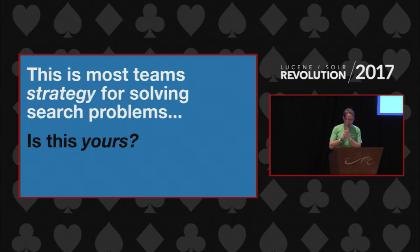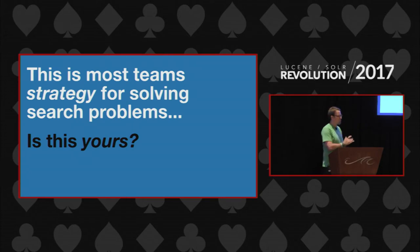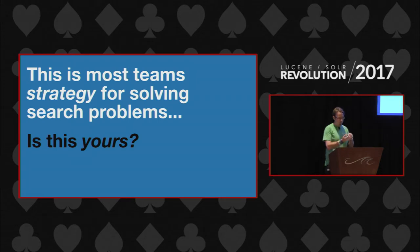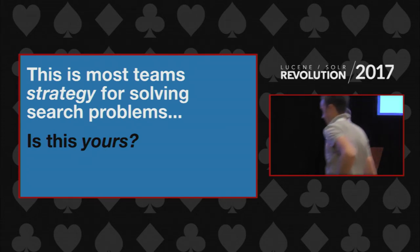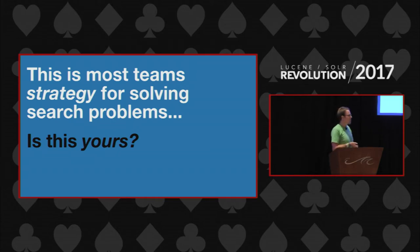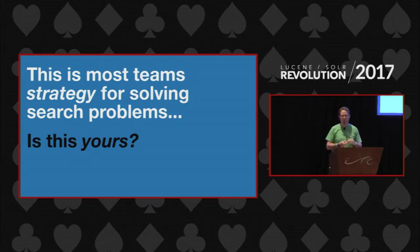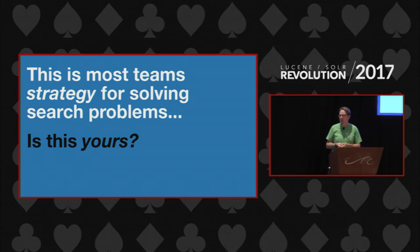I'm going to describe most search teams' strategy for solving search problems — and I'll be curious if it reflects your team's strategy. A search problem like: people can't find what they're looking for, they're doing searches but never add to cart on an e-commerce website, or everybody comes to the home page and then bounces. Or maybe we want better search because someone said we need better search, and you have no idea how to fix it.